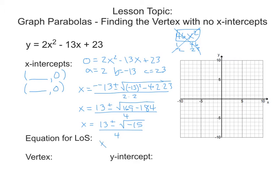We get x equals 13 plus or minus i root 15 over 4. It's important that you write that whole step down, because now that we know there is an i in our answer, we know we're in the imaginary number system. Imaginary solutions mean there are no real solutions for x, so there are no x-intercepts — and that means we cannot average them to find our equation for the line of symmetry.